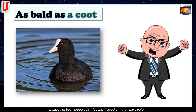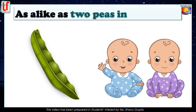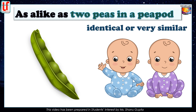As bald as a coot. This expression means completely bald, like the uncle you can see on your screen. As alike as two peas in a pea pod. You can hardly make out the difference between two peas of the same pea pod. So this simile means identical or very similar. Look at those twins — they are as alike as two peas in a pea pod.